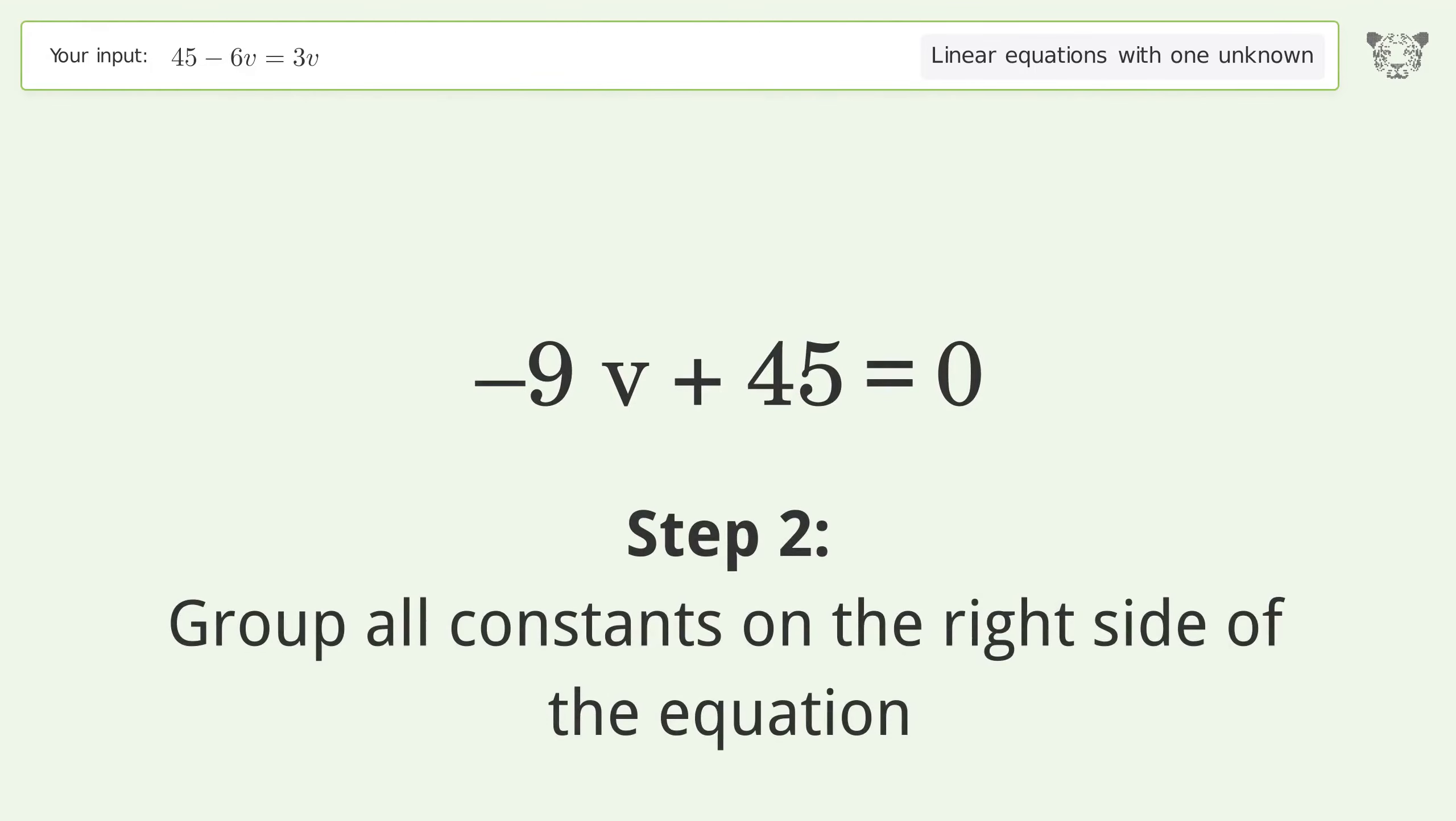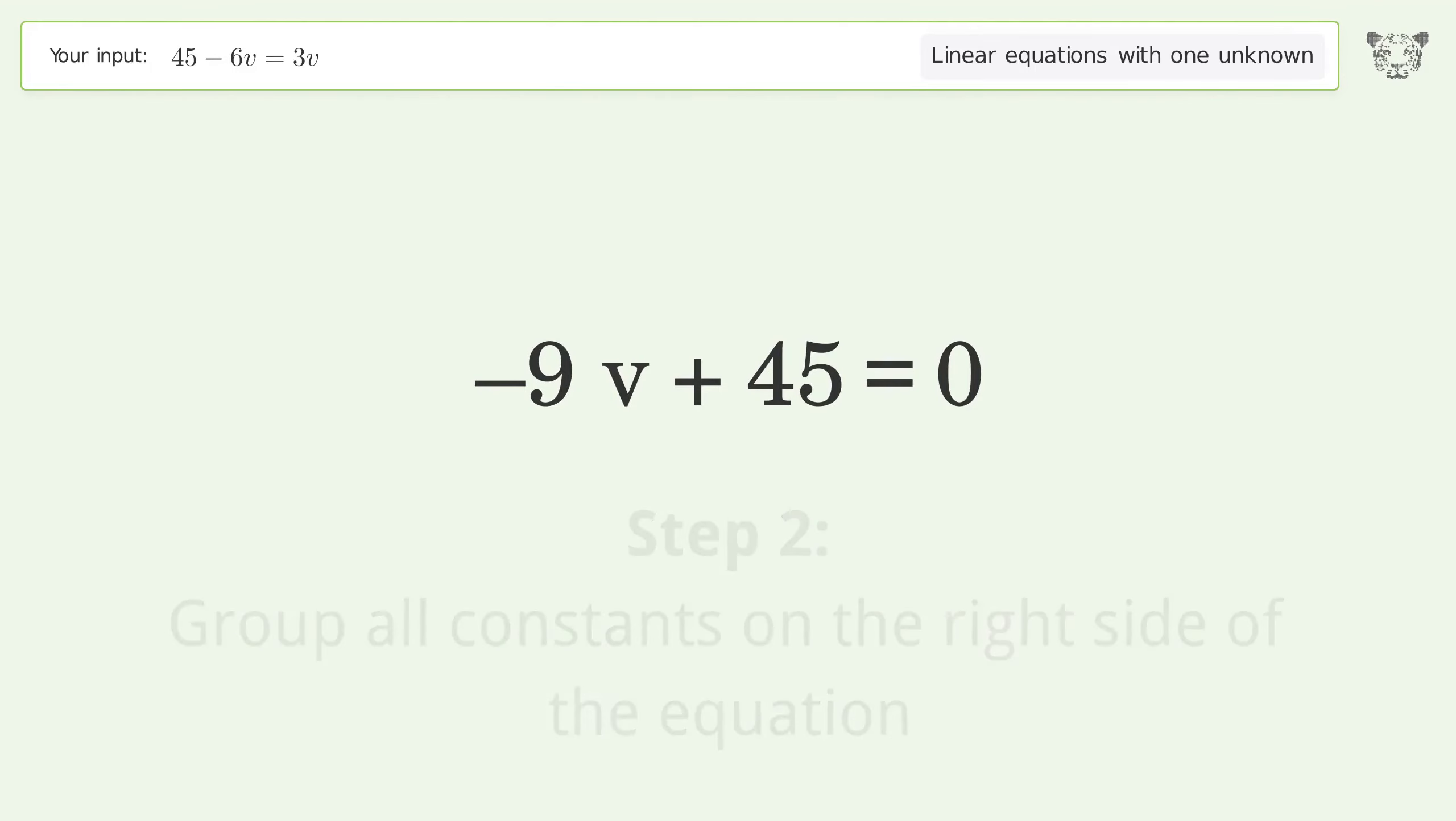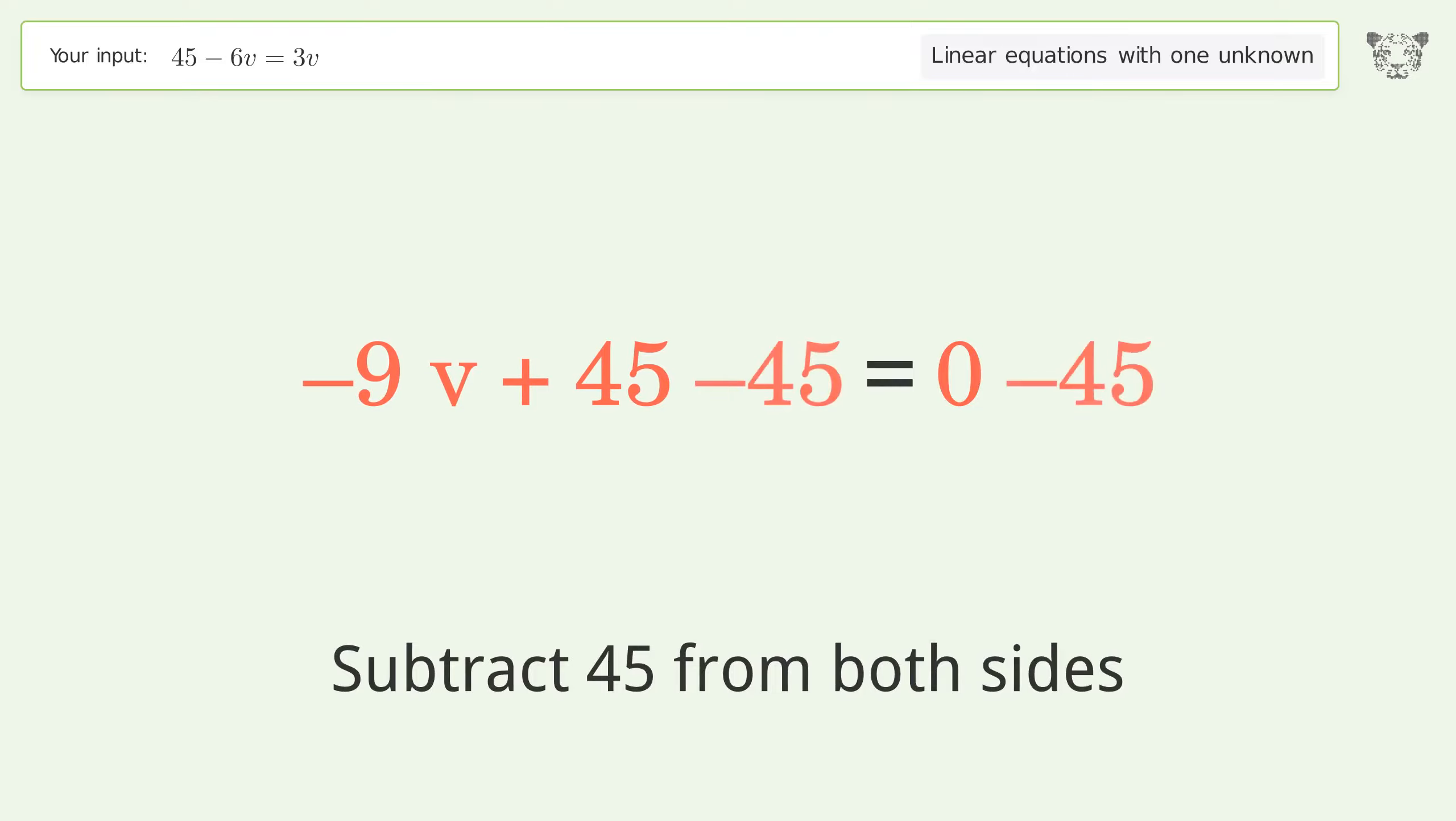Group all constants on the right side of the equation. Subtract 45 from both sides. Simplify the arithmetic.